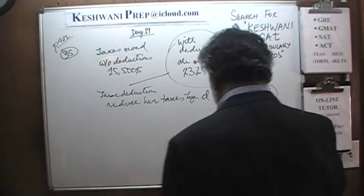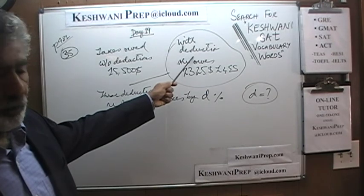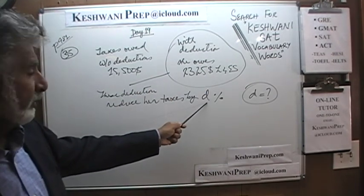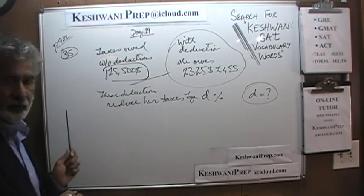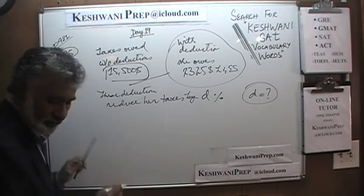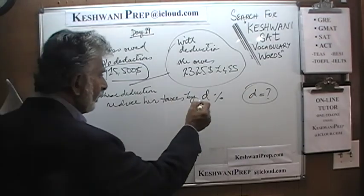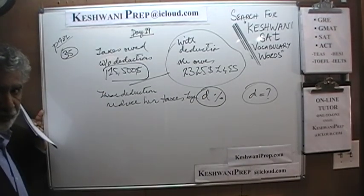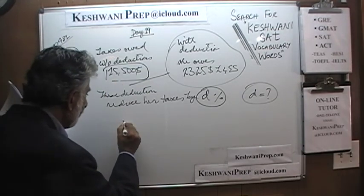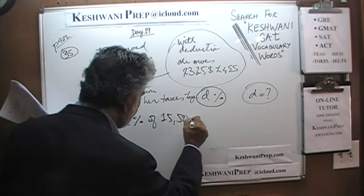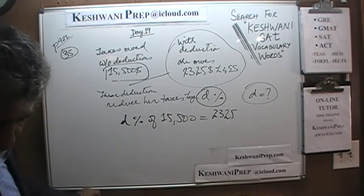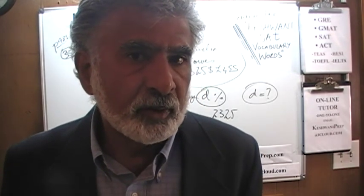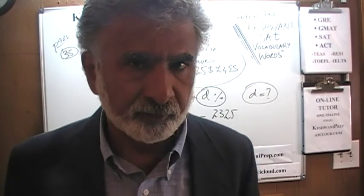The deduction reduces her taxes by D percent — D percent of what she would have ordinarily paid without the deduction. Ordinarily she would have paid $15,500. So D percent of $15,500 equals $2,325, because that's how much the taxes go down. The amount of taxes she owes goes down by $2,325, which represents D percent of the amount she would have ordinarily paid had she not taken the deduction.